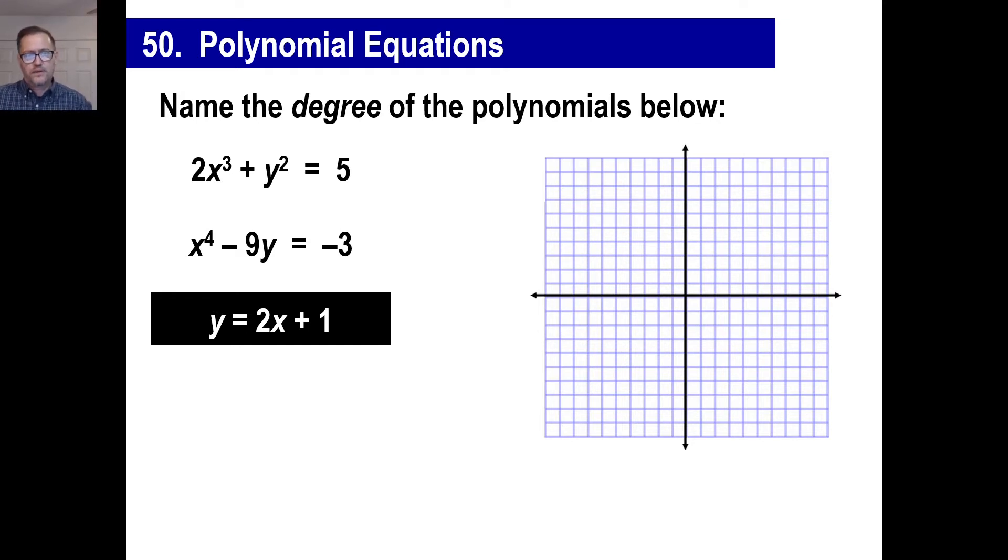But to start off with, let's look at the question below that says, name the degree of these polynomials. Well if you remember, the word degree means the largest exponent value. So let's look at this equation first. The largest exponent value is obviously the 3 here. So the degree of this is 3. This one, what is the degree of that equation? Well you see that there's a 4 there, so that degree is 4.